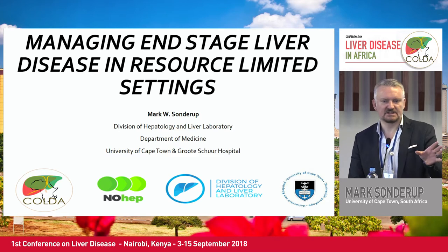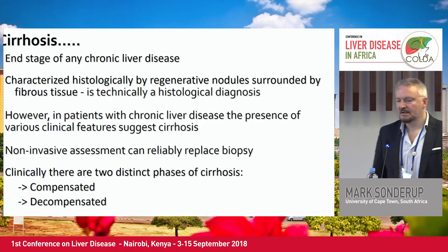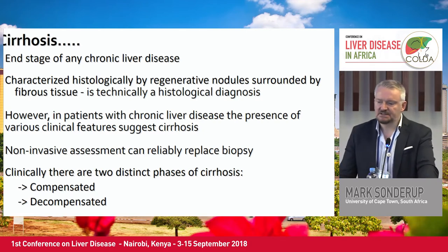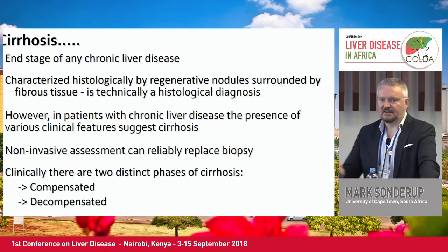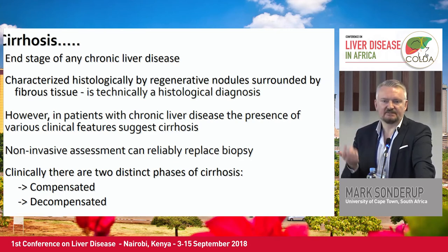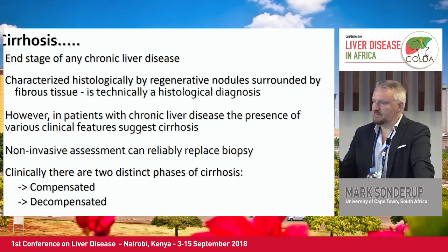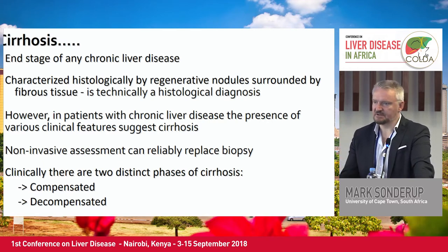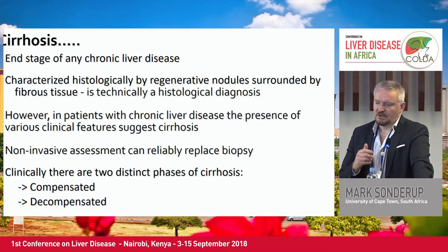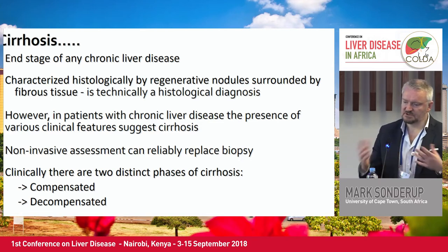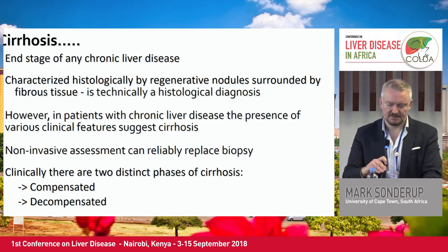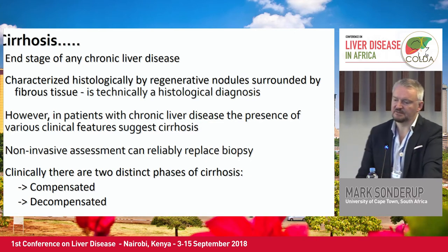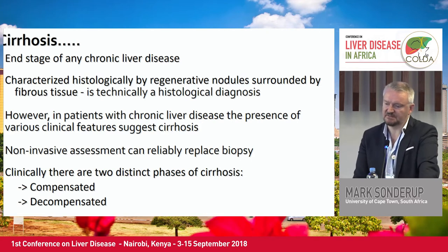We're talking about end-stage liver disease, so we're talking about cirrhosis — the end stage of any chronic liver disease. It's characterized histologically by regenerative nodules surrounded by fibrous tissue. To the hepatologists and purists, cirrhosis remains a histological diagnosis down the microscope. But we seldom do that. For most purposes, we make the diagnosis inferentially, and we have a lot of tools available to us to say this patient, in fact, has cirrhosis.